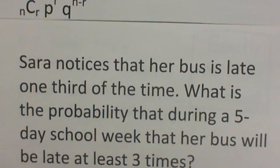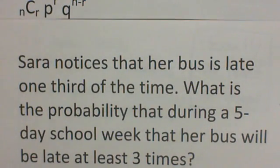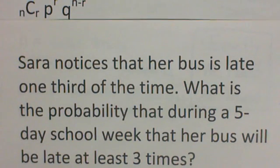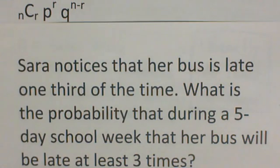So this is the one I would like you to try. Sarah notices that her bus is late one-third of the time. What is the probability that during a five-day school week that her bus will be late at least three times? So the key word there is at least three times out of the five-day school week, and it's a one-third chance that the bus is going to be late. So go ahead and try that yourself, and then click the link to see if you got it right.